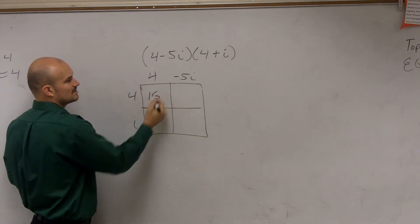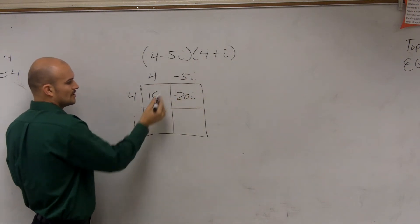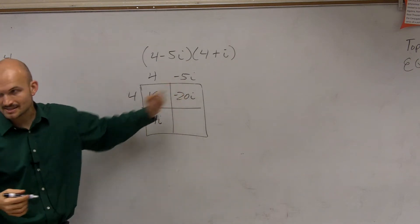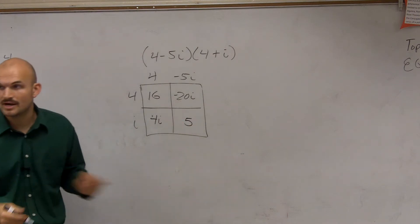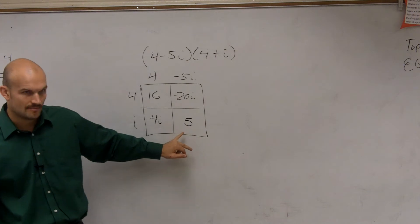4 times 4 is 16. 4 times negative 5i is negative 20i. 4 times i is 4i. And then from our last example, negative 5 times i squared is a positive 5, because i squared is negative 1. Negative 1 times negative 5 is positive 5.